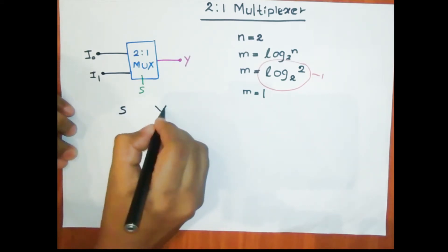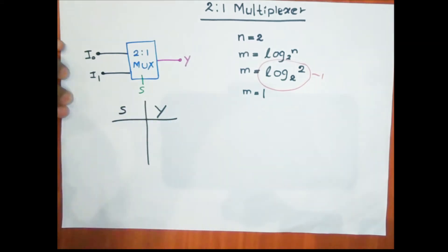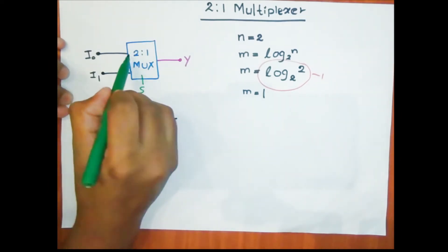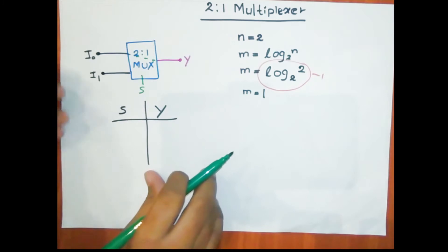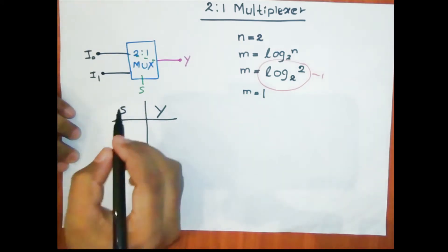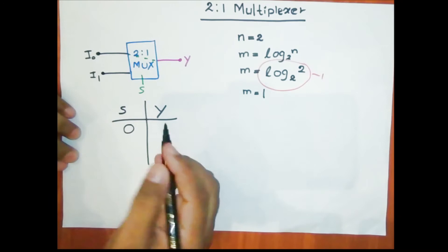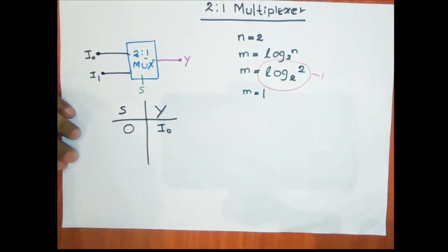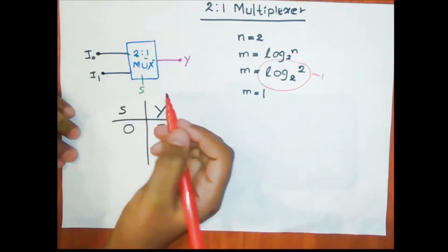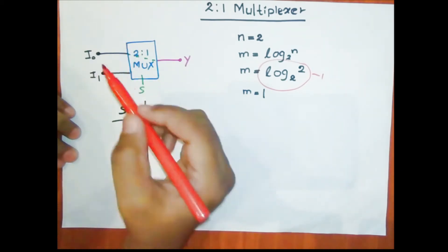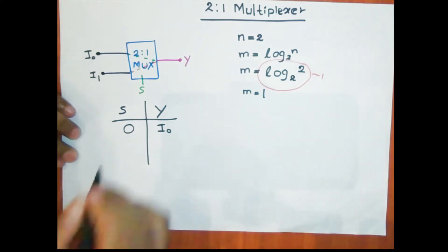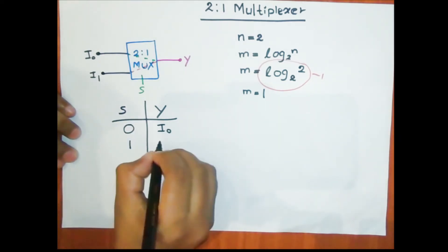With one selector, let's draw the truth table for this multiplexer. We have one selector s and one output y. When the selector s is 0, i0 goes to the output, so s equals 0 and y equals i0. When the selector s is 1, i1 goes to the output, so s equals 1 and y equals i1.